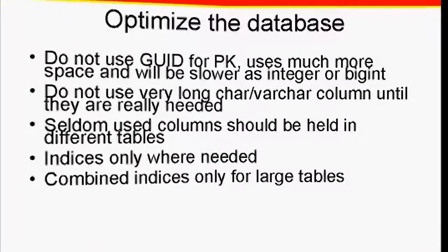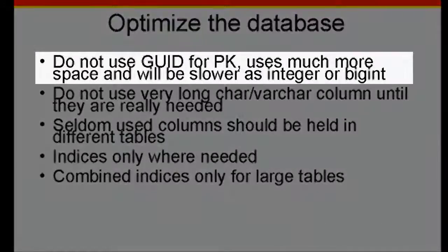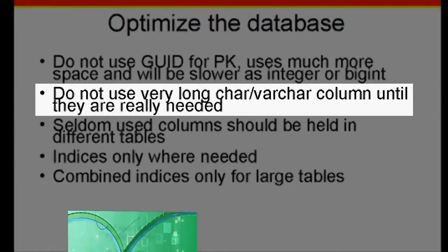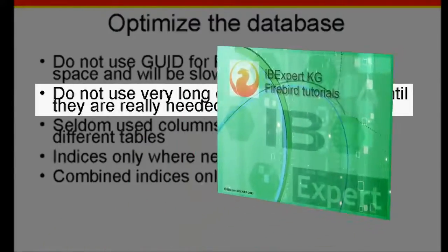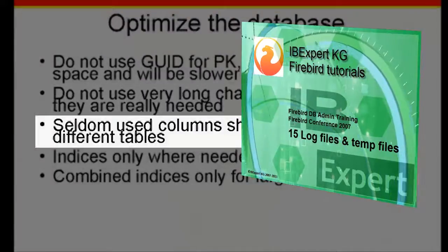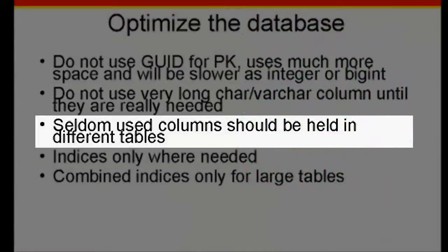Do not use GUID for primary key fields, as these use much more space and will be slower than an integer or big int. Do not use very long char or varchar fields unless they are really necessary. The reasons for this are explained in tutorial 15, log files and temp files. Seldom used columns should be stored in different tables.